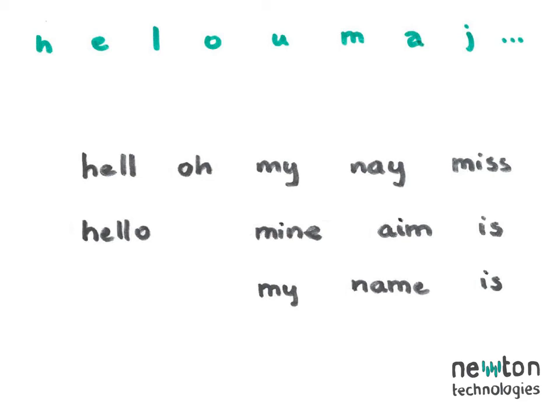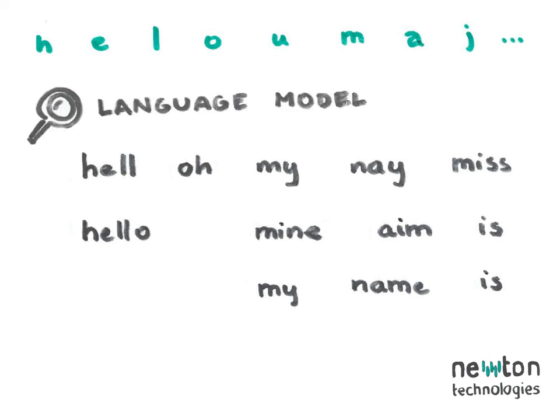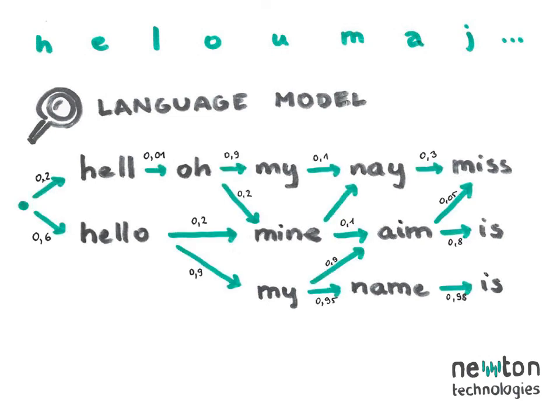Or it could be heard as another variation of "Hello, my name is," or yet another — so which one is it? The part of ASR responsible for mapping phones to words and phrases is called the language model. You can imagine the language model as a huge table that contains the probabilities of two words following each other. In our case, the language model looks at these possibilities and determines which combinations are the most probable ones. Since "Hello, my name is" is a fairly common phrase in contrast to the others, chances are that the ASR system will evaluate it correctly.